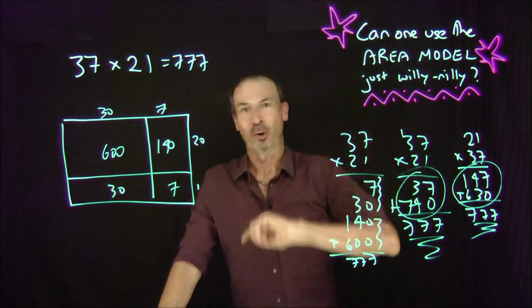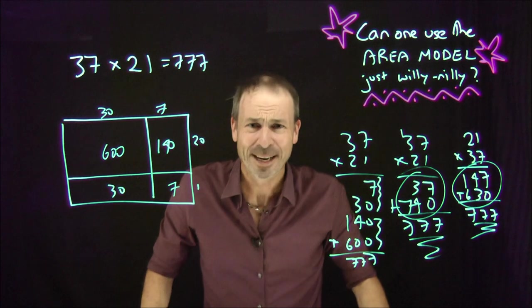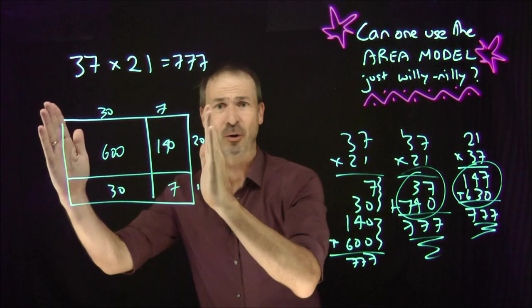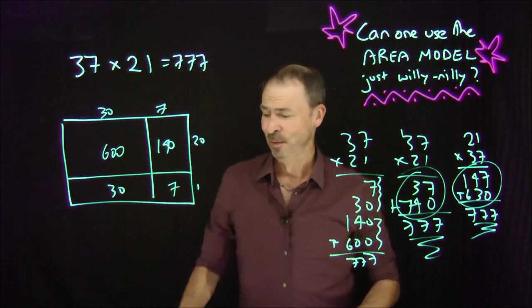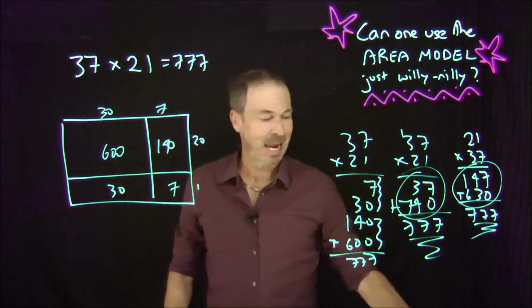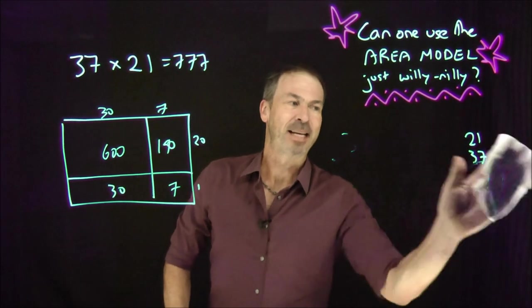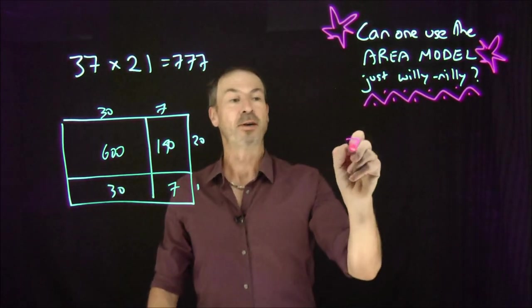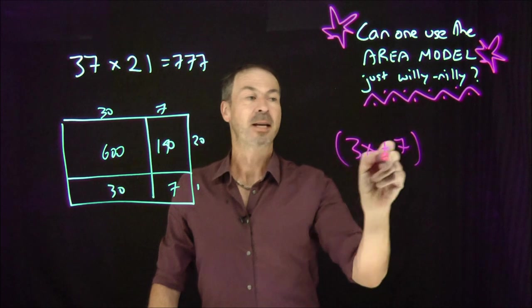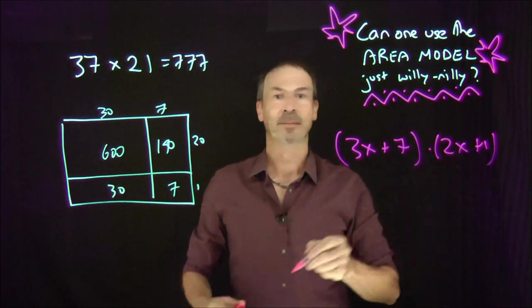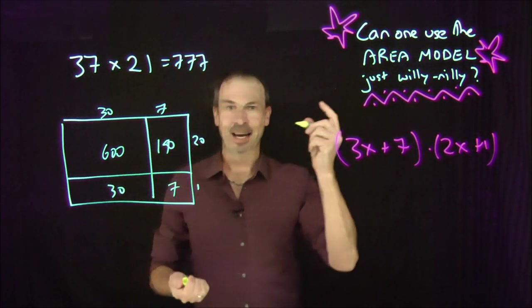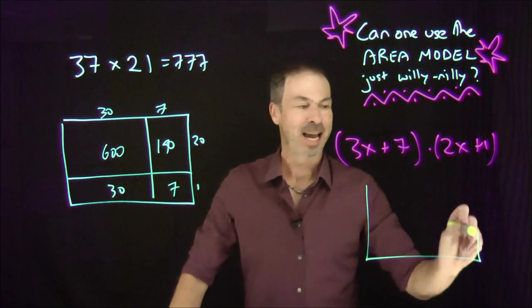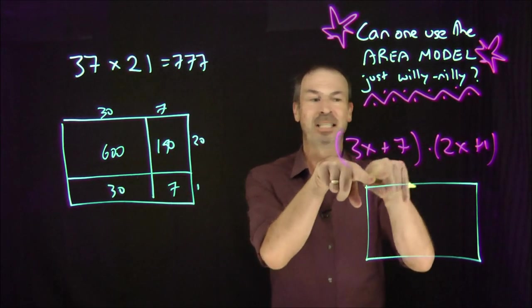But then what about my question: can we just use it willy-nilly? Here's why I'm asking. Because suddenly we go from grade school to high school, where you do things not in base 10, but in base x — any old base you like. You might ask things like: what is (3x + 7) times (2x + 1)? We draw exactly the same area model: a rectangle that's 3x + 7 inches wide and 2x + 1 inches down.